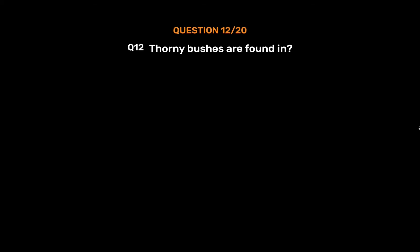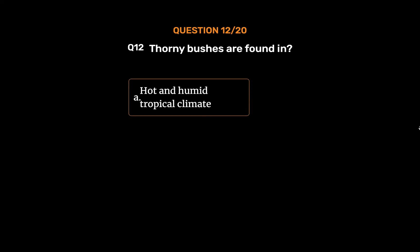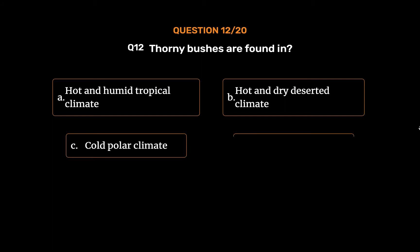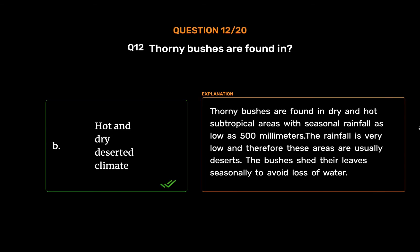Question number 12: Thorny bushes are found in? Option A: Hot and humid tropical climate. Option B: Hot and dry deserted climate. Option C: Cold polar climate. Option D: Cold and humid climate. The correct answer is Option B: Hot and dry deserted climate. Thorny bushes are found in dry and hot subtropical areas with seasonal rainfall as low as 500 mm. The rainfall is very low, so these areas are usually deserts. The bushes shed their leaves seasonally to avoid loss of water.